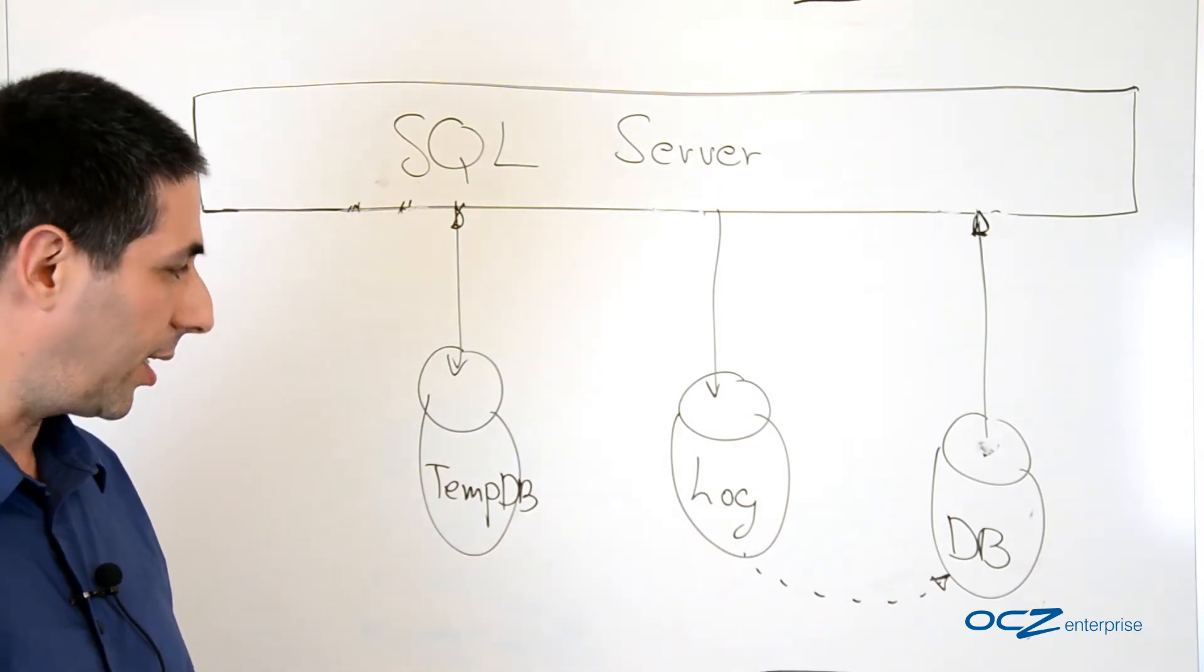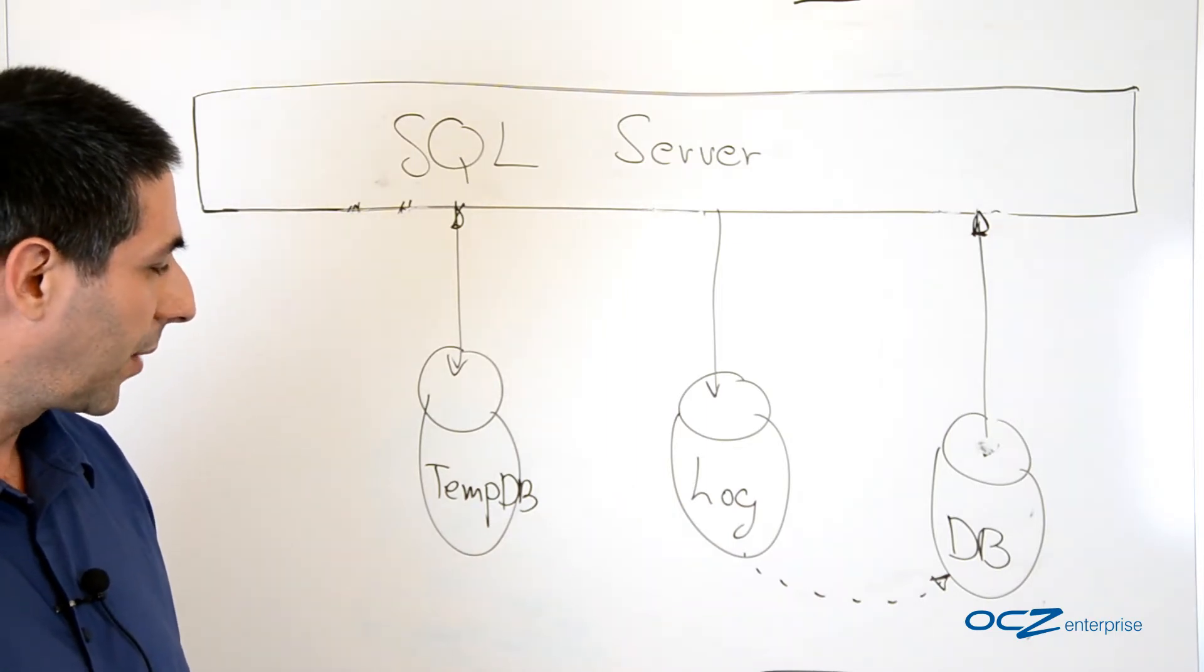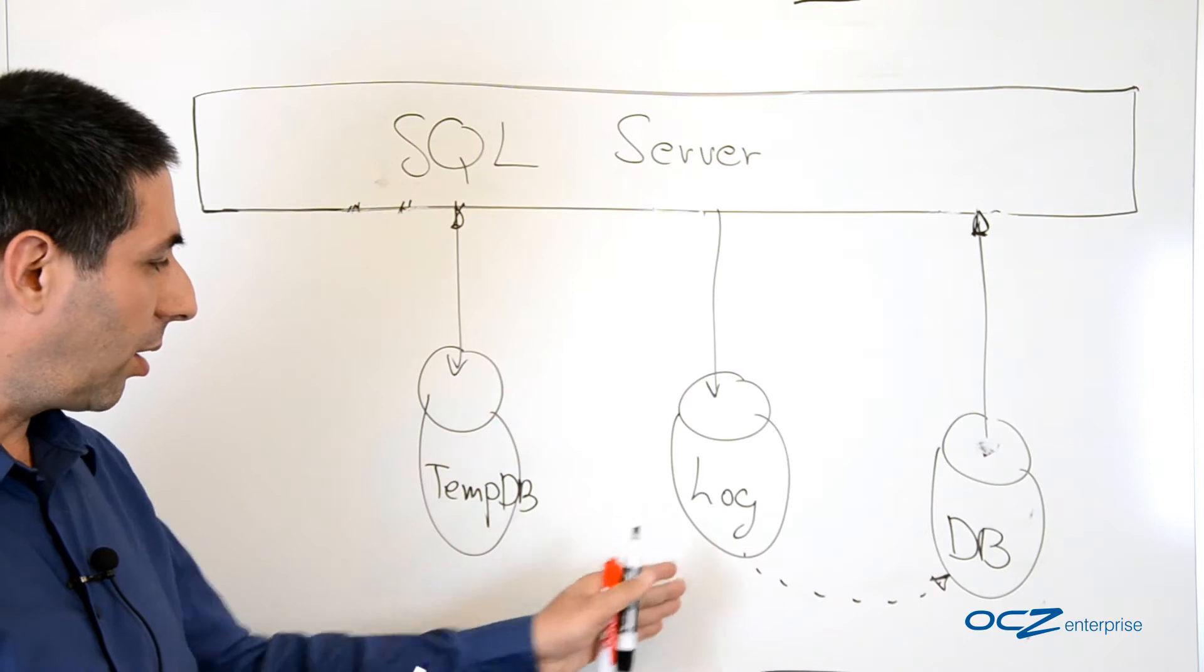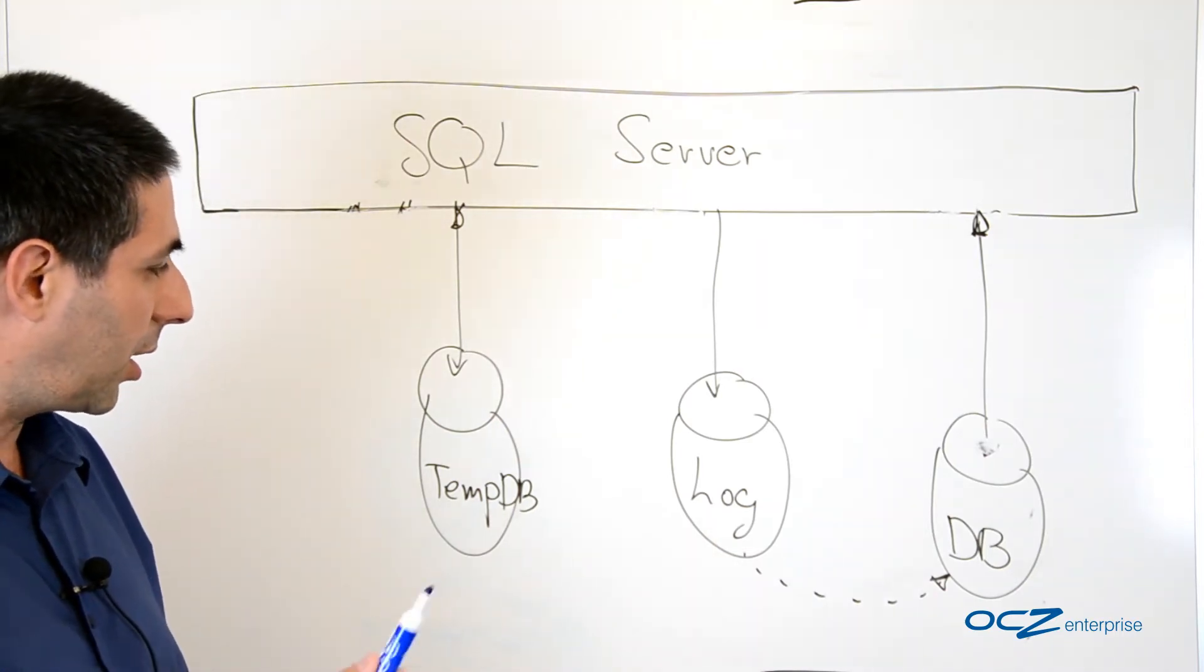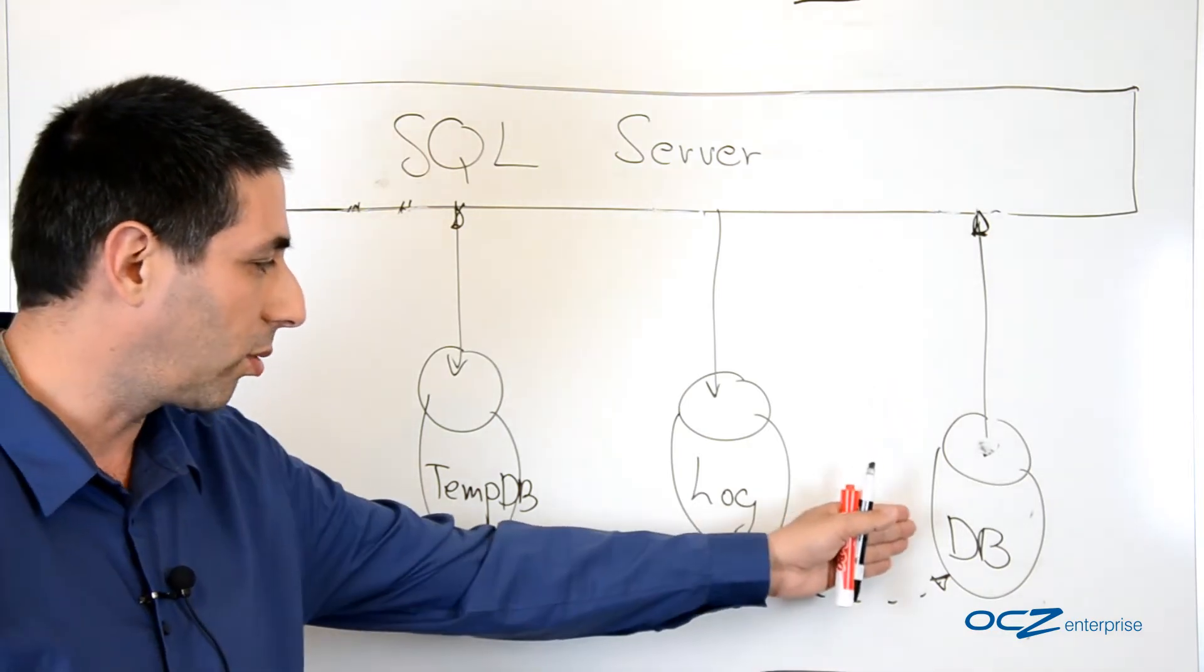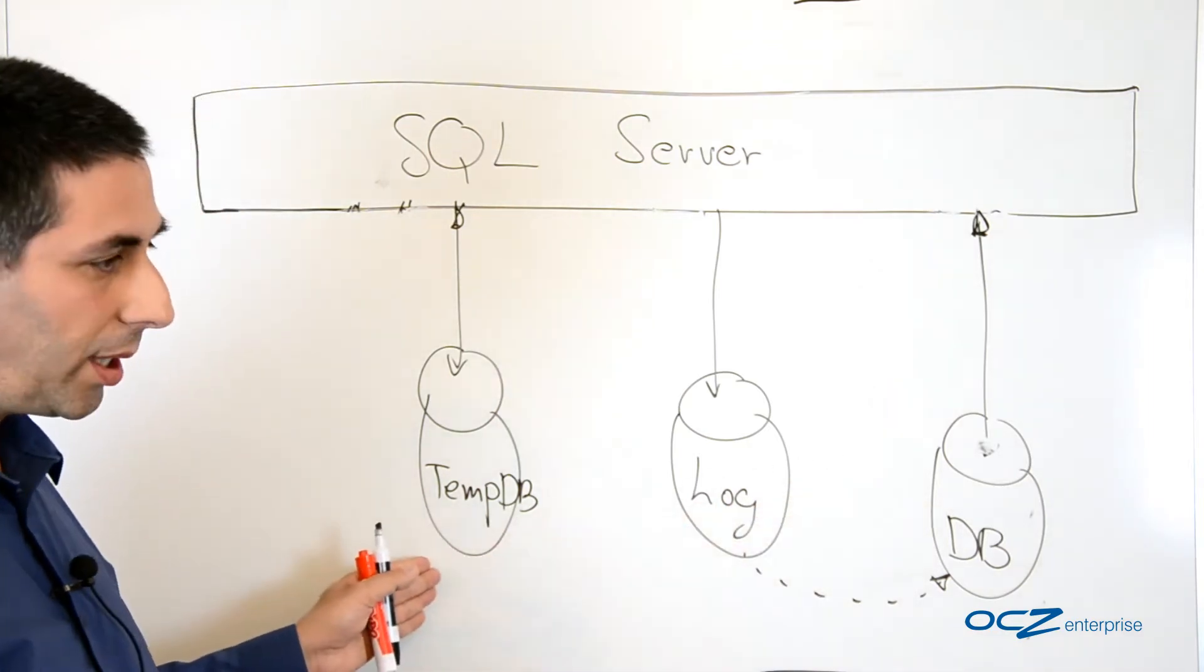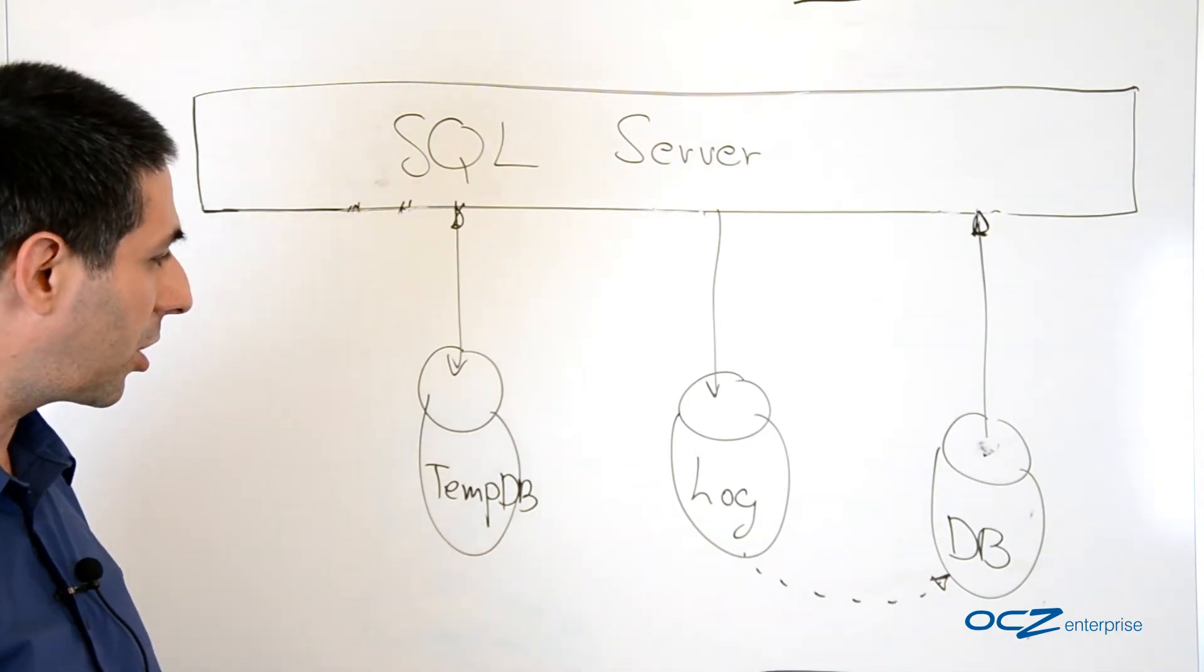Now, how can we accelerate this data using flash devices and the ZDXL software? The tempdb and the log are data types that can be stored directly on the flash. The log file is a relatively small file comparing to the database, and the tempdb is non-persistent data. This is swap information; it doesn't have to be persistent.